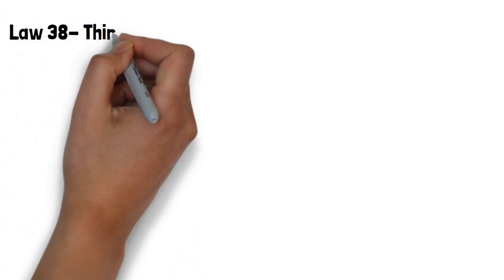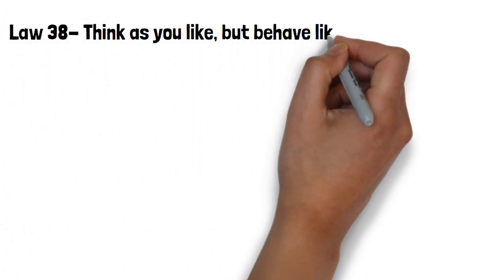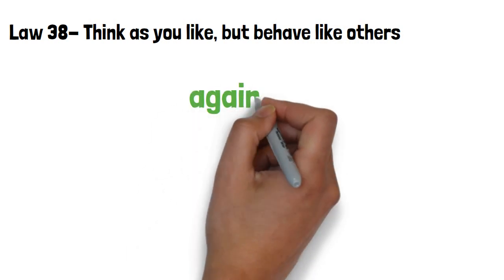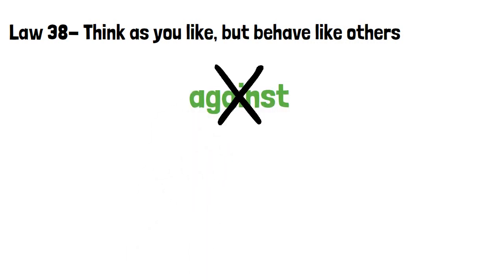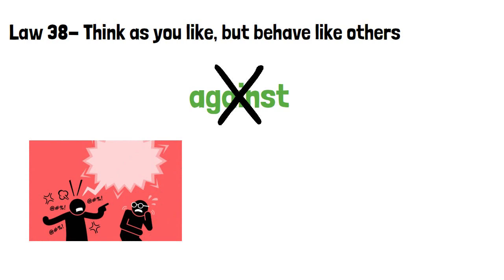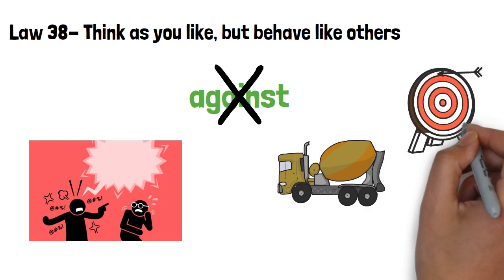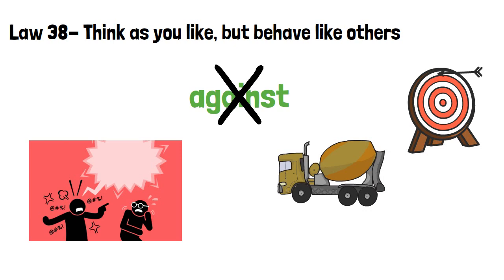Law 38, think as you like, but behave like others. By consistently going against what everyone else follows, people will begin to hate you for making them inferior. Practice blending in and hiding your true feelings to nurture the common touch. This will help you to be left alone to express your true beliefs in a targeted way. As soon as you make the base of power, you can then start to disseminate your beliefs slowly, and they are more likely to be adopted.